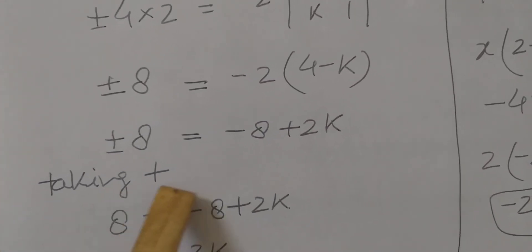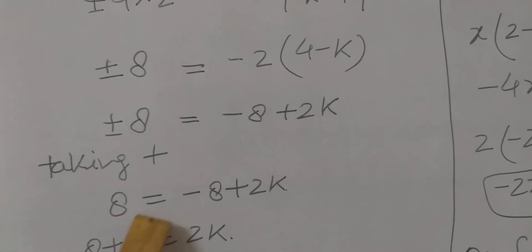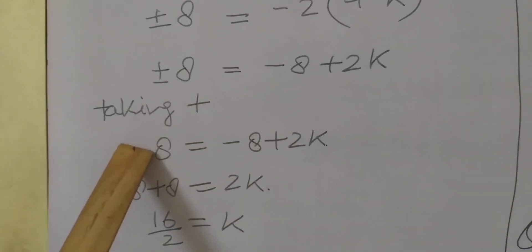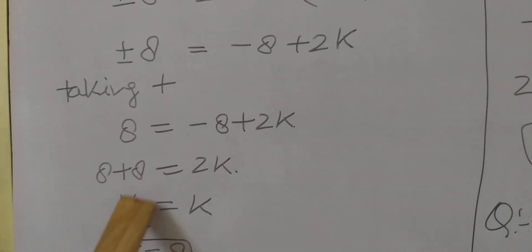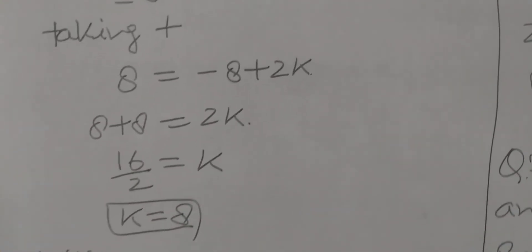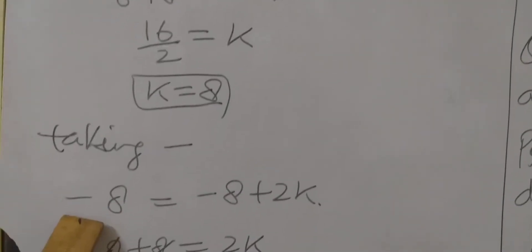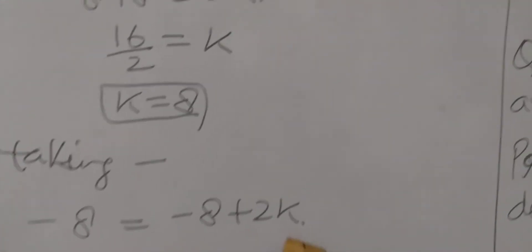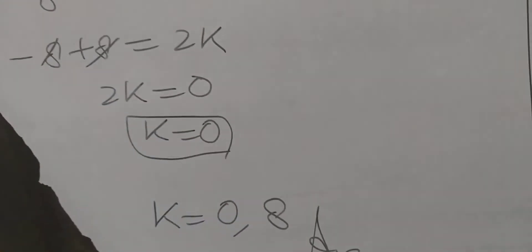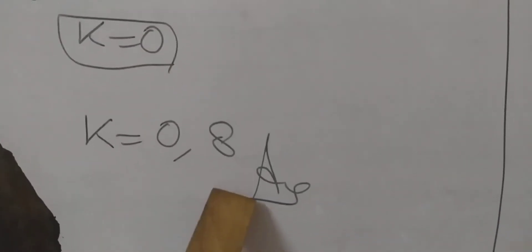Taking the plus sign first: 8 = -8 + 2k. Transposing -8 gives 8 + 8 = 16 = 2k, so k = 16/2 = 8. Now taking the minus sign: -8 = -8 + 2k. The -8 and +8 cancel, giving 2k = 0, so k = 0. We have got two values of k: 0 or 8.